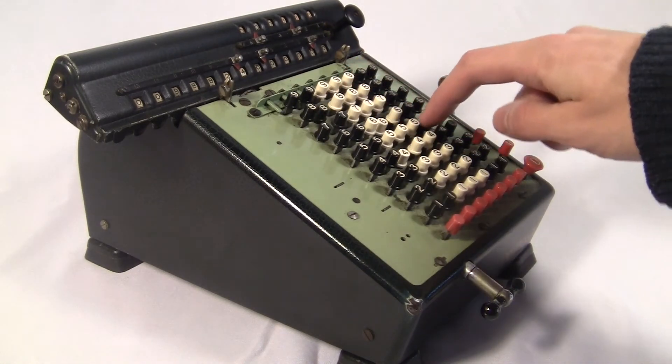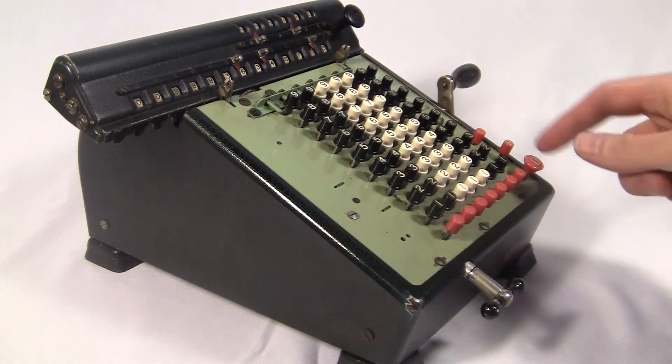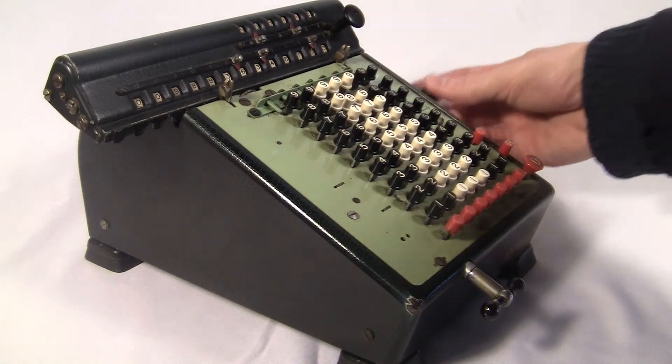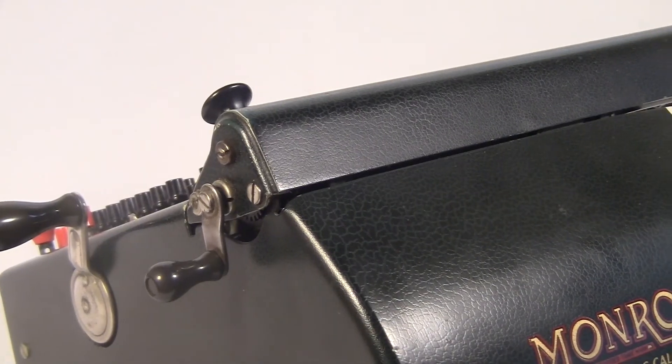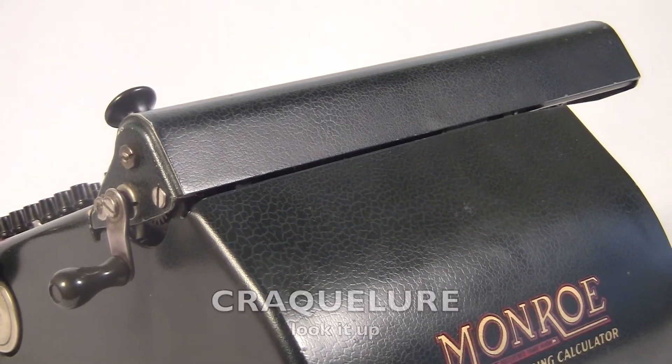My model's in pretty good condition. The case is in good shape. The logo print is pretty clean. This is a pretty good looking machine, actually. The case is dark green. And if you look carefully, you see kind of a crackle-lure pattern. I just learned that word.